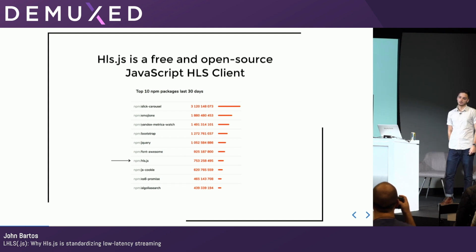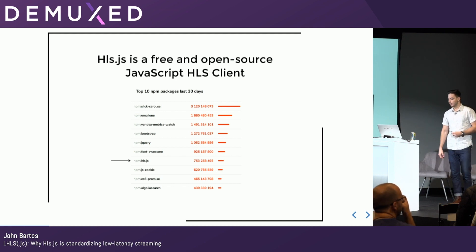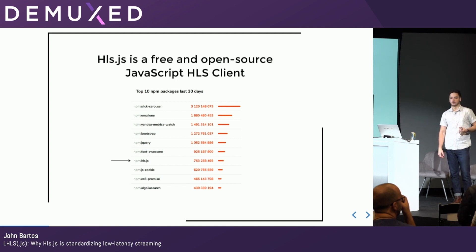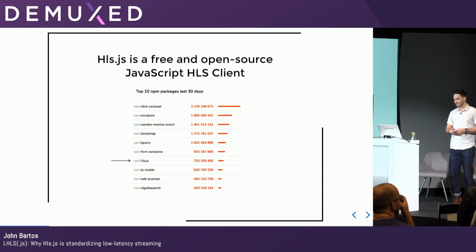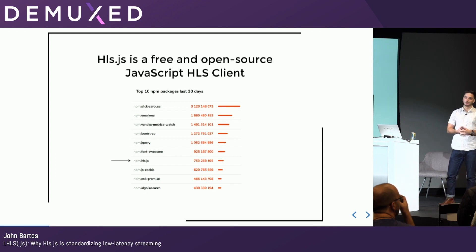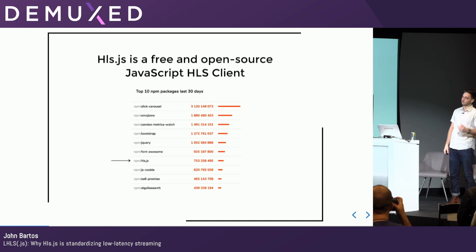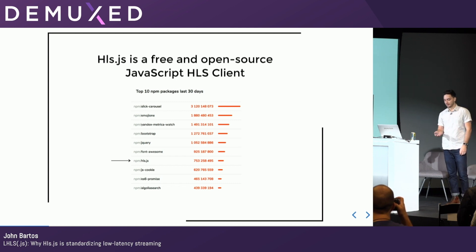This number has gone up and I just got sick of updating this slide. But on private CDNs, we're also doing another five billion plus hits a month. I'd like to think it's because of how awesome our project is, but I also think it reflects the popularity of HLS as a format.